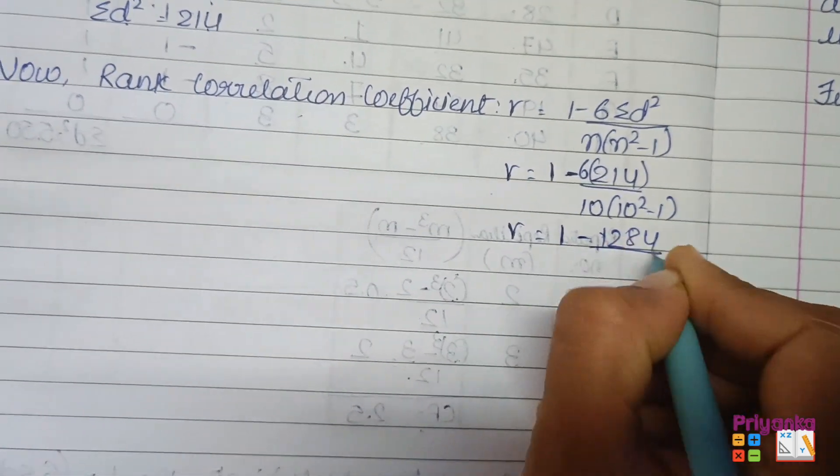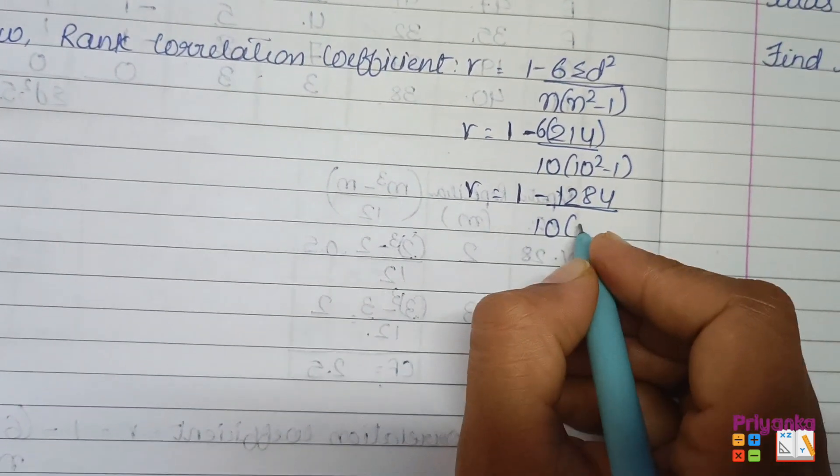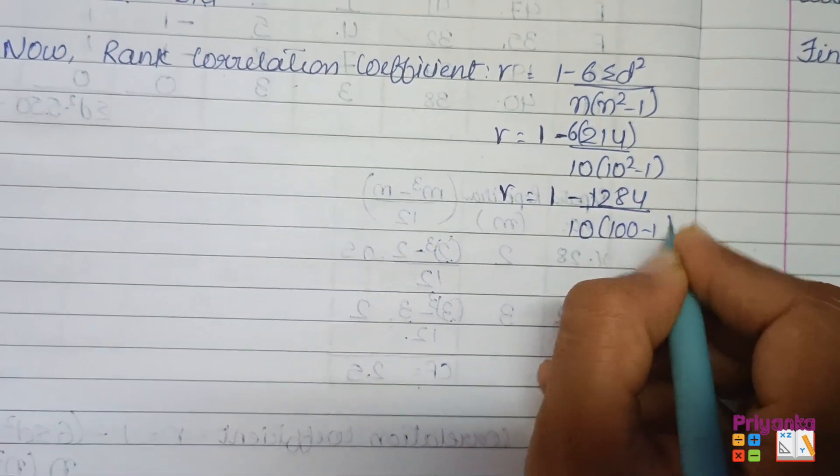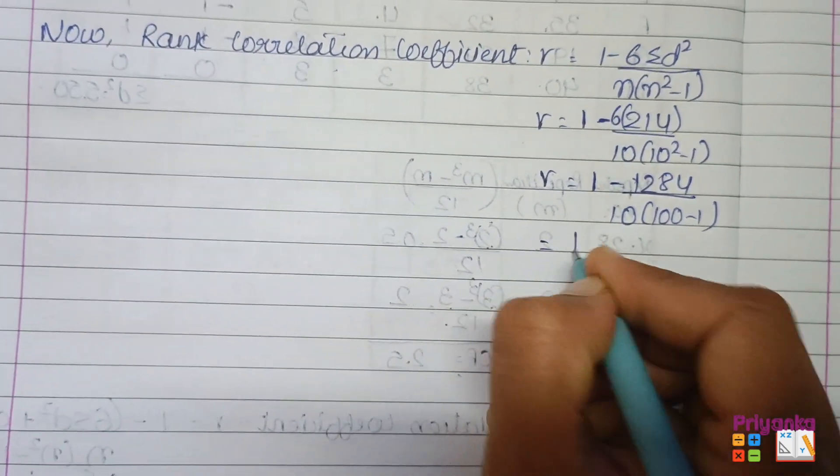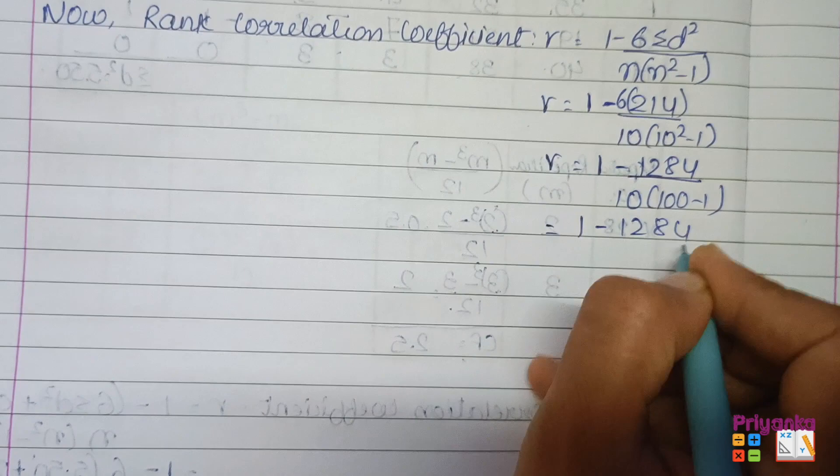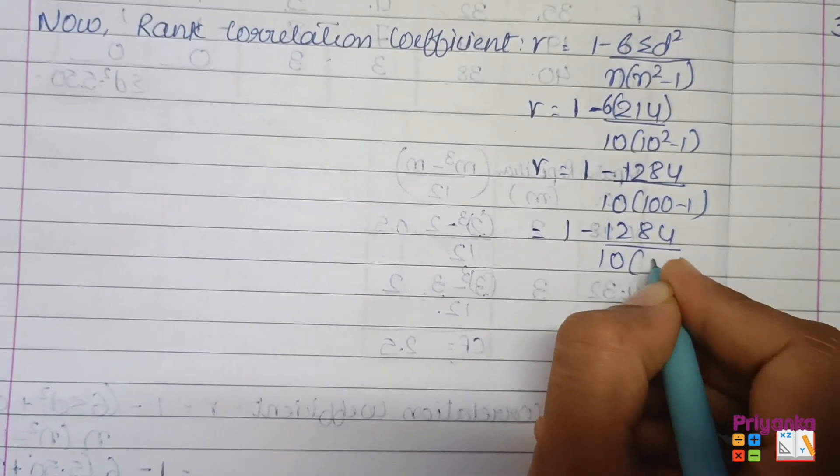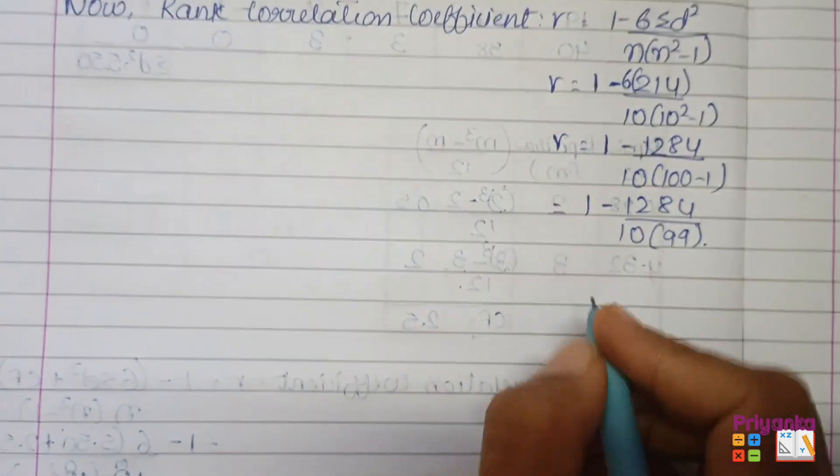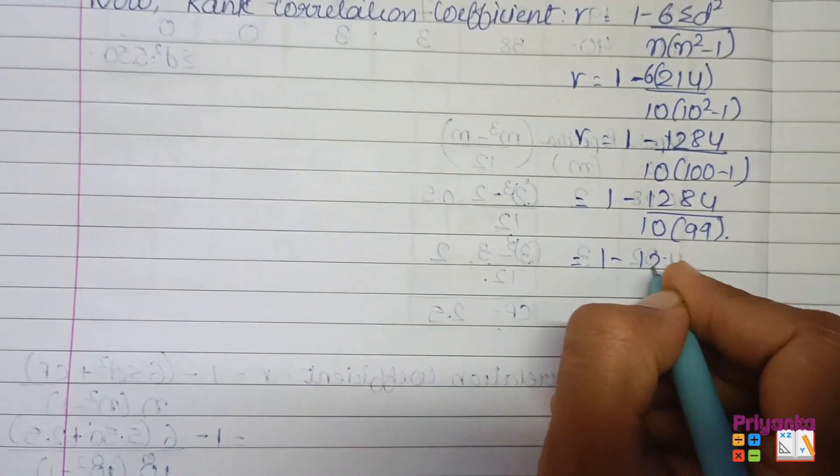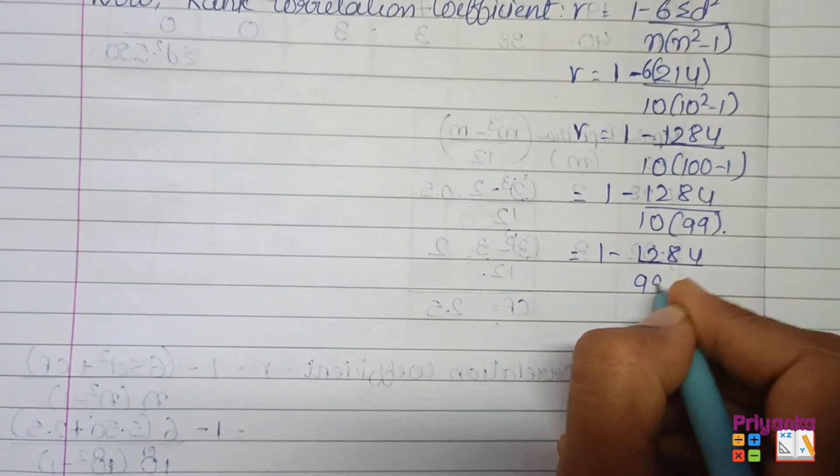We get 1284. Here 10, 10 square means 10 times 10 is 100, 100 minus 1. 1 minus 1284. 10 multiplied by 99, that is 990.